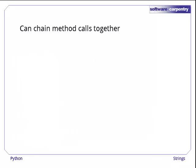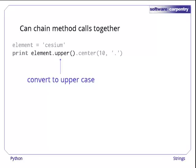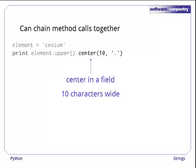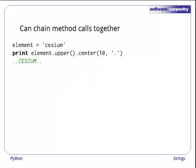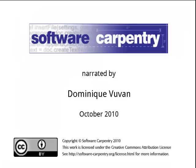One common idiom in Python and other languages is to chain method calls together. Here's a rather contrived example. The first method call, the one that is invoked directly on the variable element, returns a string that is the uppercase version of the string cesium. We then call center on this string to create yet another one that has the uppercase copy of cesium centered in a field ten characters wide. The result is shown here. The technique is no different from a mathematician writing f of g of x.